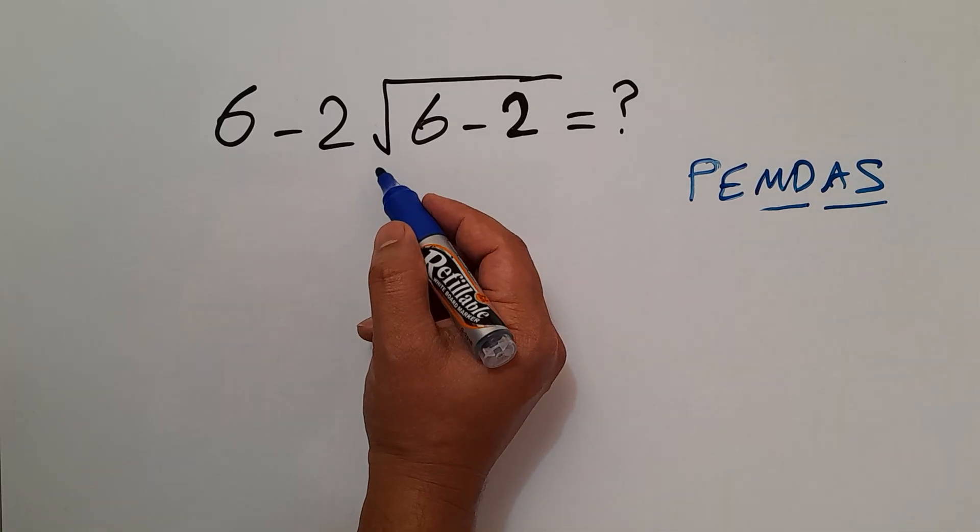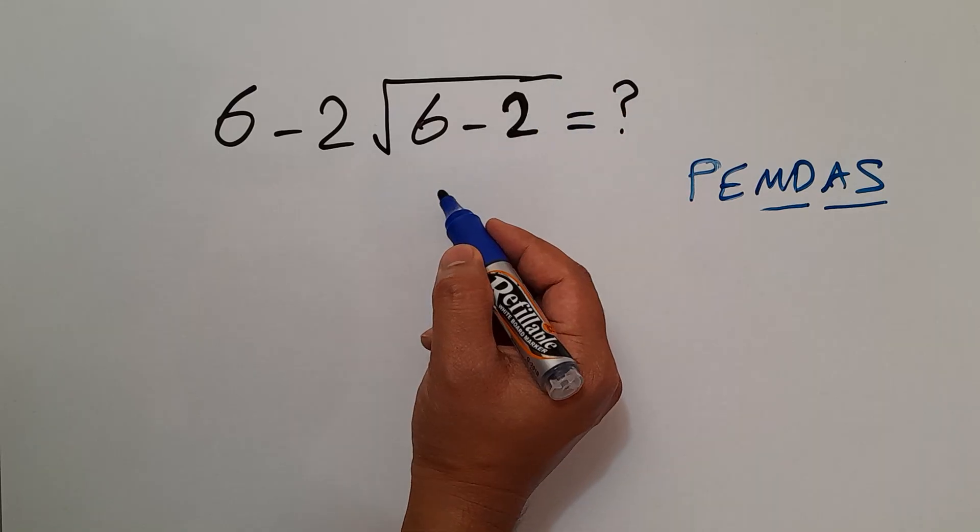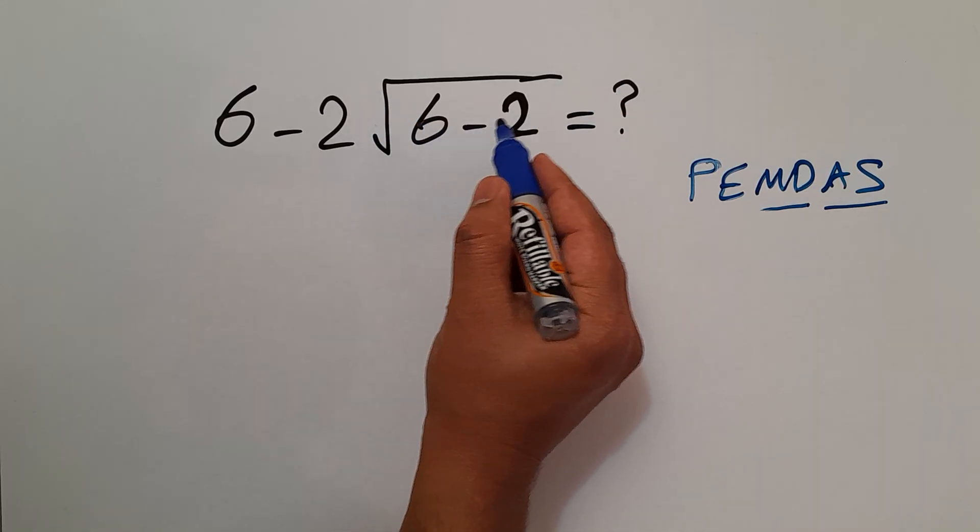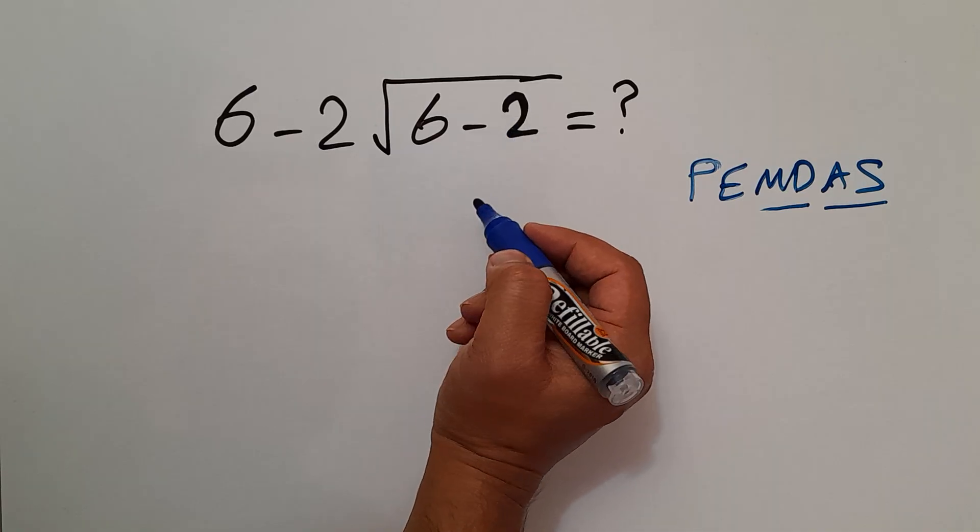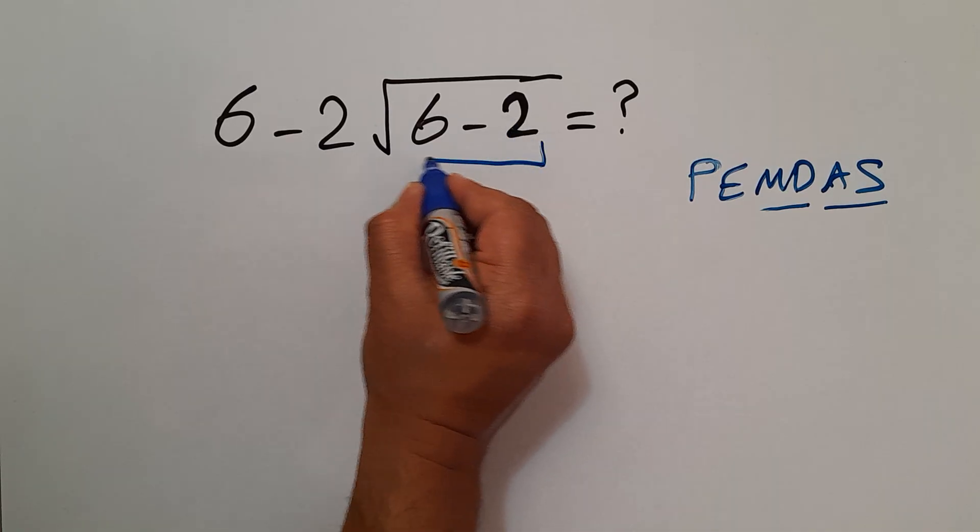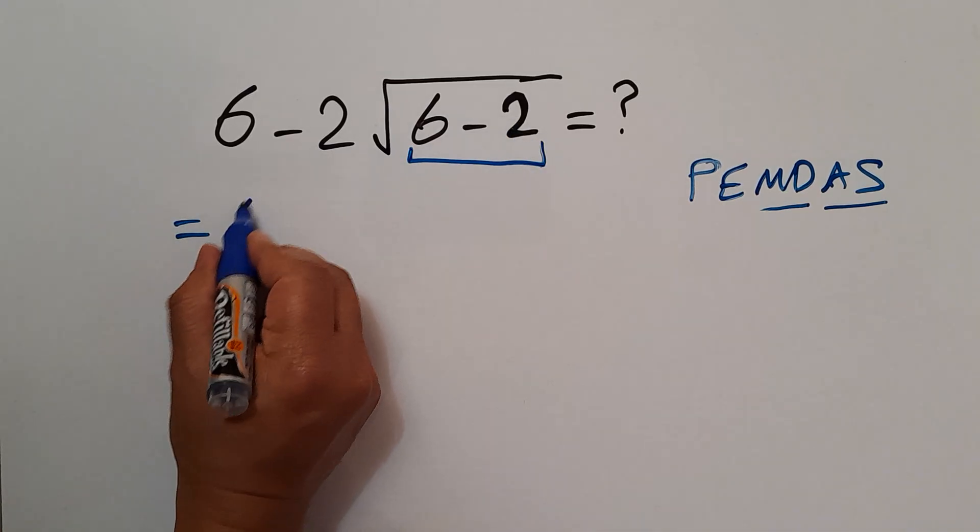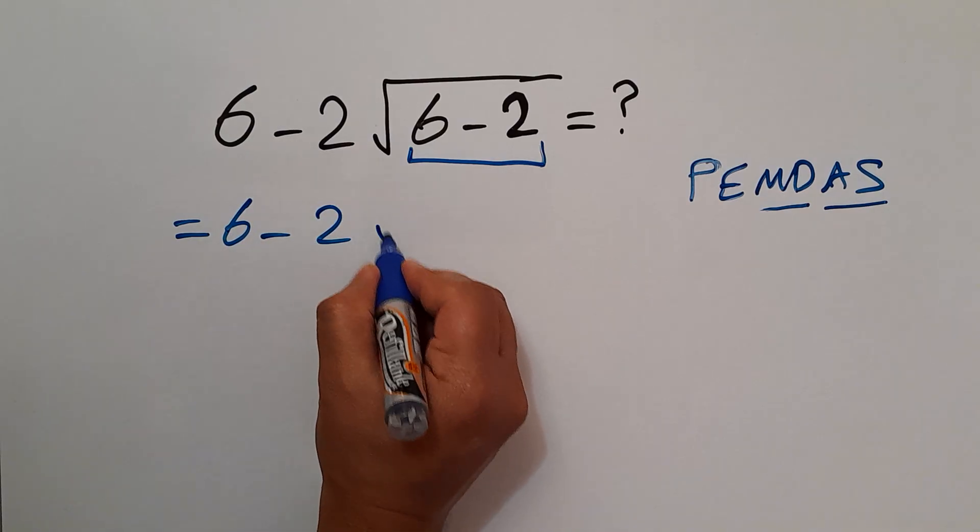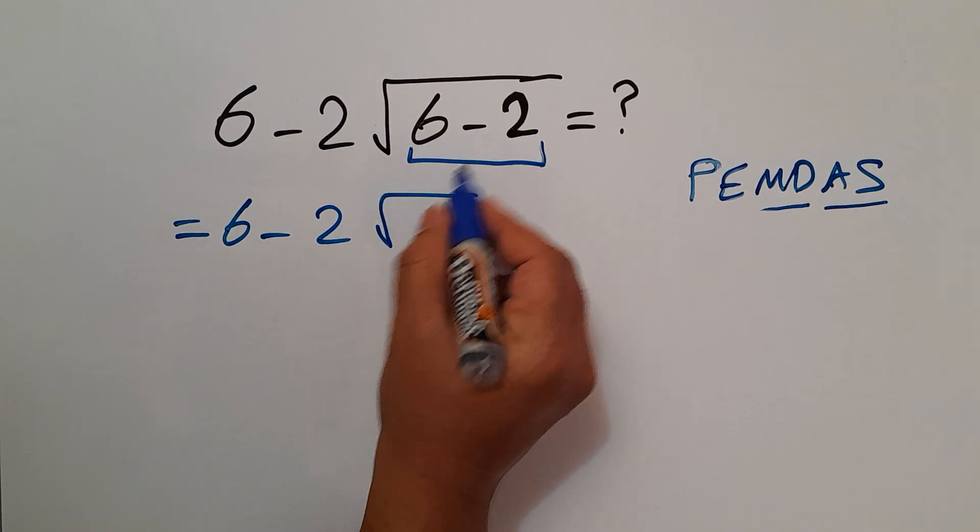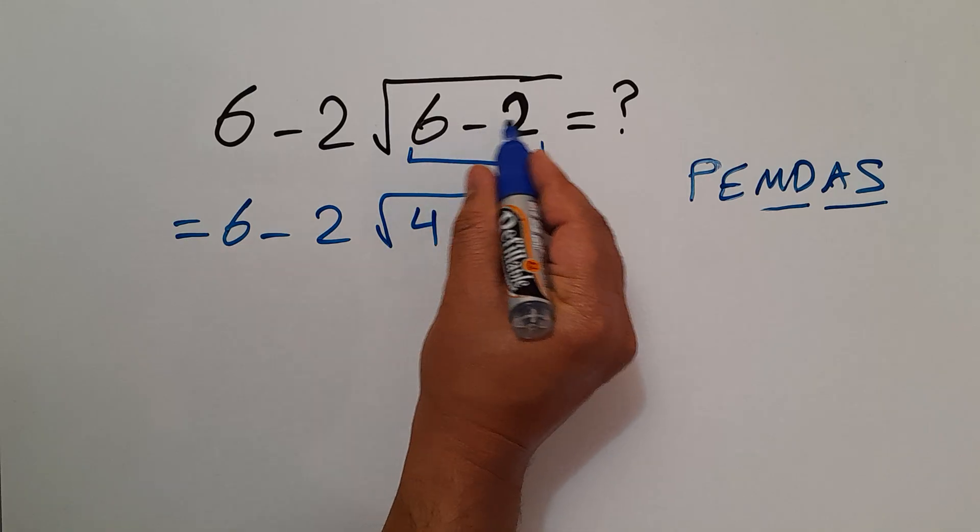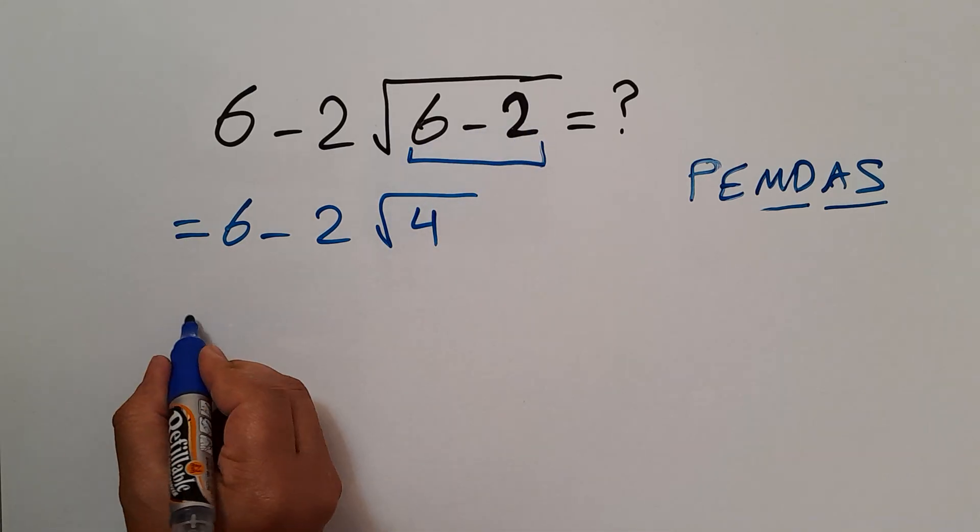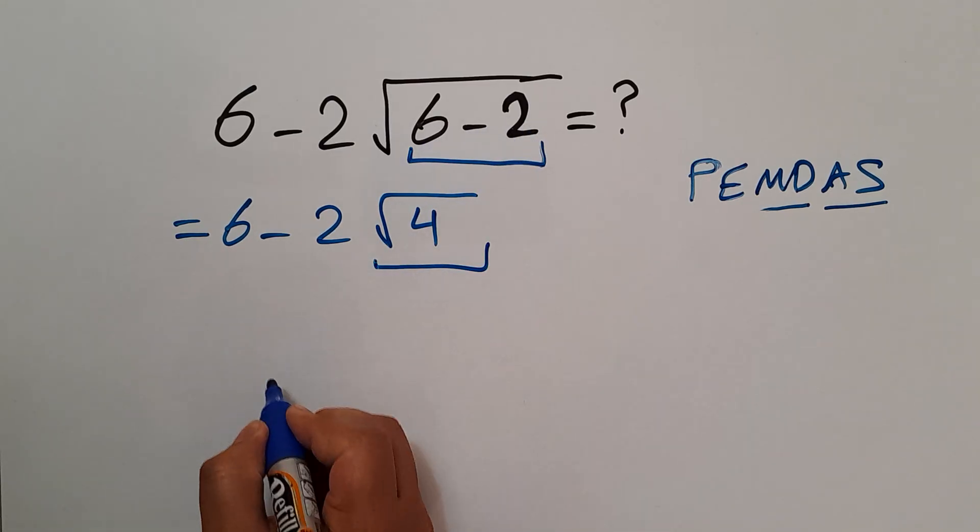So here we first do this exponent. Square root of 6 minus 2. 6 minus 2 equals 4. So we have 6 minus 2 times square root of just 4. And the square root of 4 equals 2.